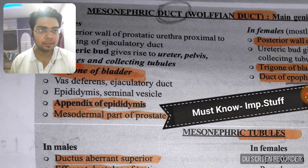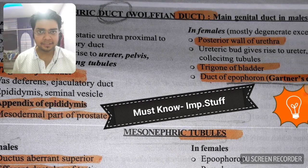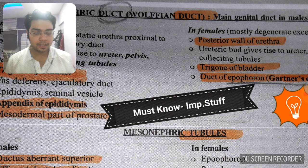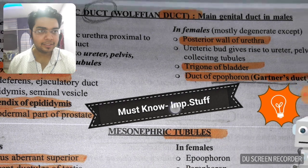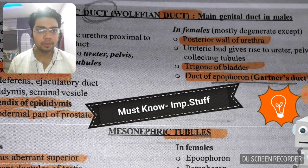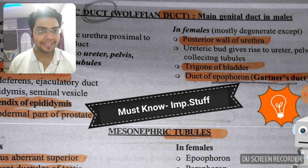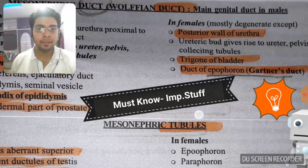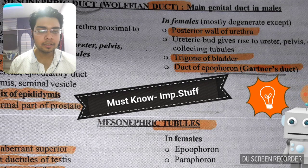In case of females, the mesonephric duct is mostly degenerated since it is not the main genital duct. It does form the posterior wall of the urethra. The ureteric bud gives rise to the ureter, pelvis, collecting tubules, calyces, and trigone of the bladder. It also forms the duct of epoophoron, also called Gartner's duct.